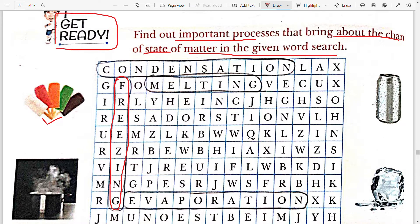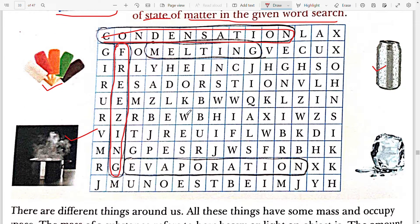Next process is of evaporation. You can see the boiling water and this process is evaporation. Next you can see an ice cube which is melting. The process is melting.